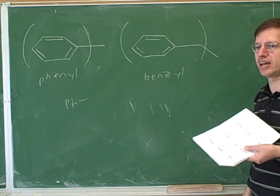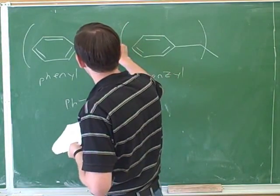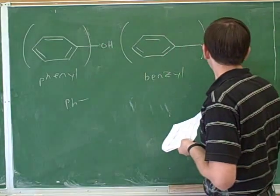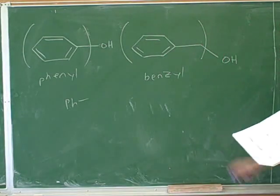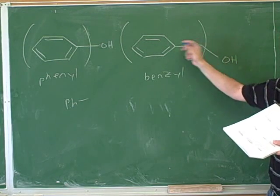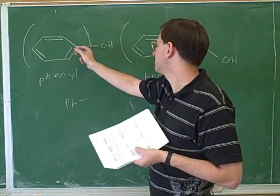We just have to make flashcards and memorize that. So for example, a good common name for this compound would be phenyl alcohol. But what would be a good common name for this compound? Benzyl alcohol. Because here the alcohol isn't on the benzene ring, it's on the CH2 that's connected to the benzene ring.